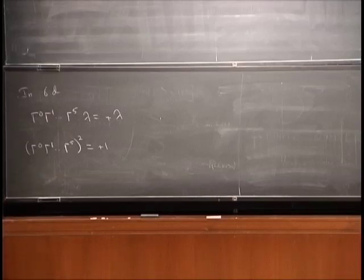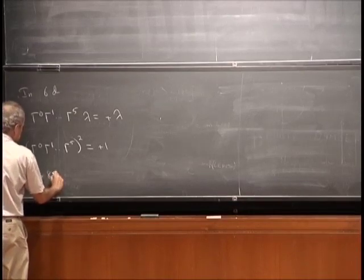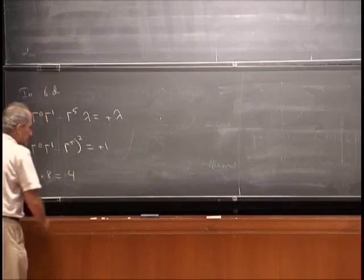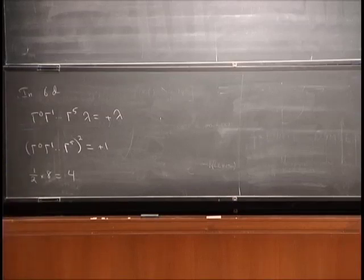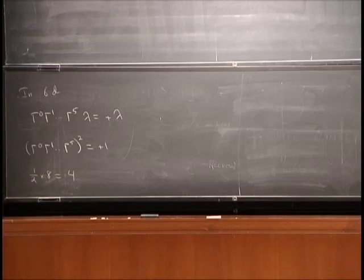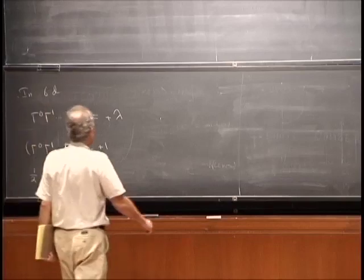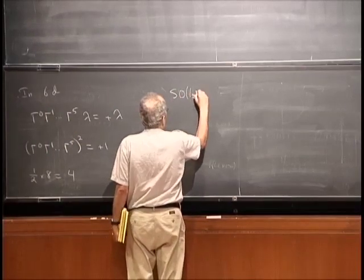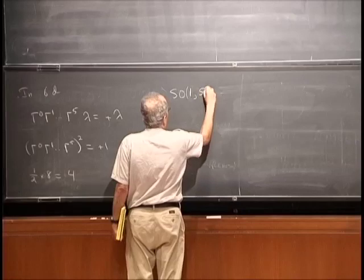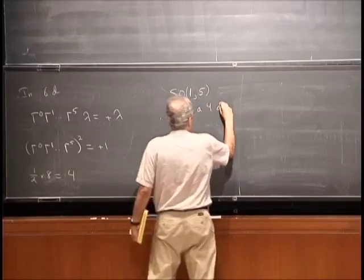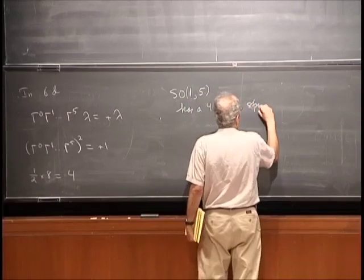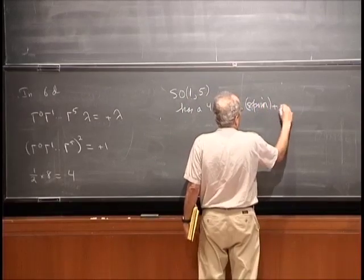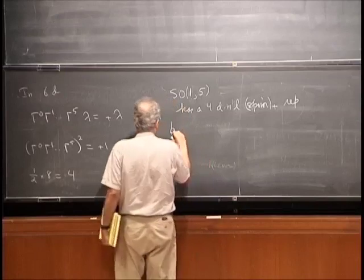The chirality condition would appear to halve the number of states, giving 4. But SO(1,5) has a four-dimensional spinor-plus representation that isn't real — it's pseudo-real. So you can't simply impose chirality and get four real components.